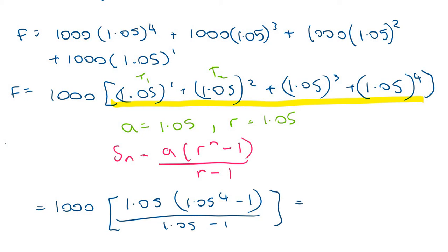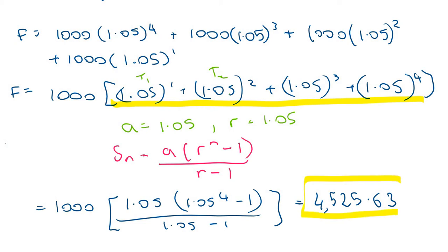So that figure is going to be 1,000 times: A is 1.05, r is 1.05, and n is 4 because there are 4 terms, all over r minus 1, which is 1.05 minus 1. So it turns out that figure is going to be equal to €4,525.63. So if €1,000 was invested every year, then after four years, that total amount — a total of €4,000 invested — would accumulate up to €4,525.